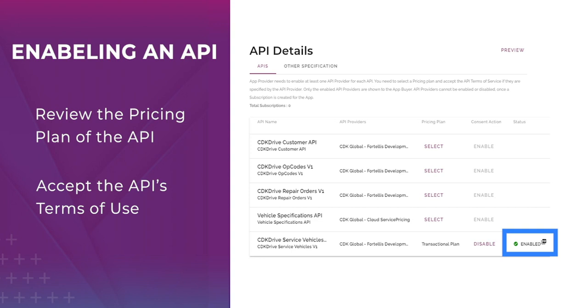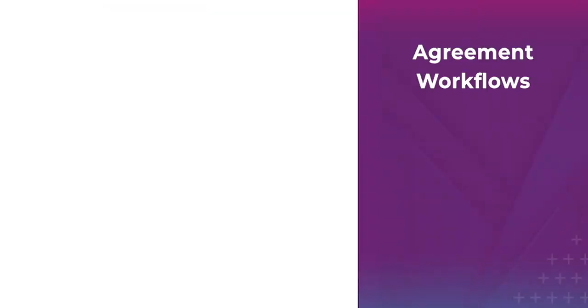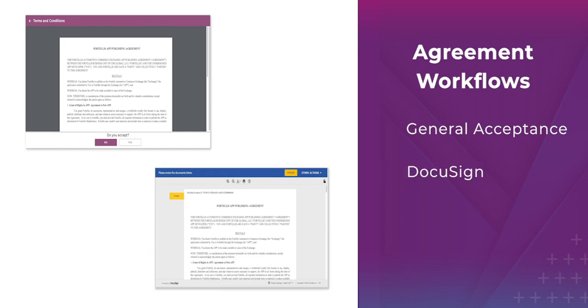You'll have to accept these terms in order to submit your app listing. Agreements with Fortelis can be displayed in two different workflows: General Acceptance and DocuSign. Let's first take a look at a General Acceptance Agreement.